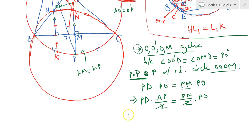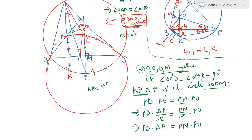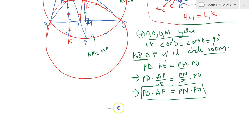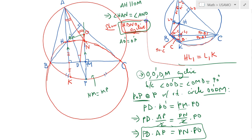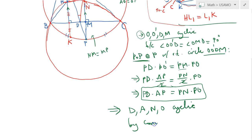Simplifying the twos, we get PD times AP equals PM times PO, which becomes PD times AP equals PN times PO. By the converse of power of a point, this implies that points D, A, N, and O are concyclic — and that's exactly what we needed to prove. By the converse of the power of a point theorem, A, D, N, O are cyclic.